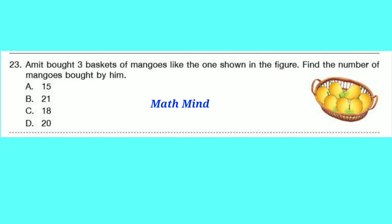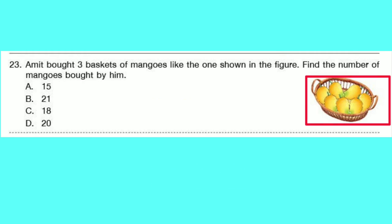Question number 23: Amit bought three baskets of mangoes like the one shown. Find the number of mangoes bought by him. There are 7 mangoes in one basket, so total mangoes in three baskets: 7 × 3 = 21 mangoes. The correct option is B.